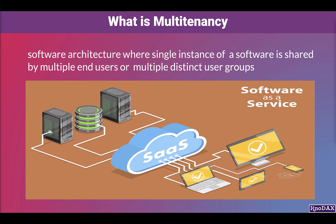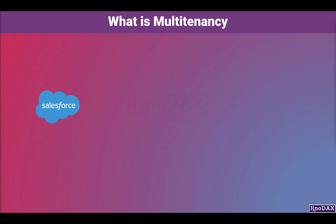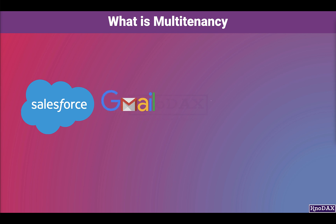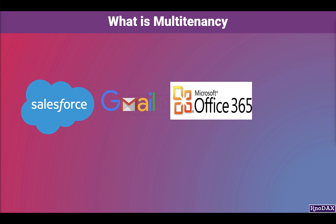SaaS software is a typical example of multi-tenancy. Here are a few examples of SaaS software: Salesforce, Gmail, Microsoft Office 365, and TurboTax, just to name a few.